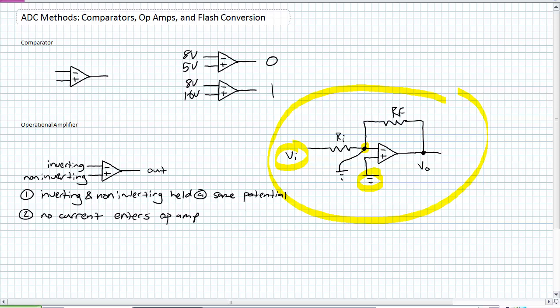If VI is higher than ground, conventional current will flow from positive to negative. Current is flowing through resistor RI. Now magical property number two comes into play. No current enters the opamp. If there is current coming into that node and none of it's going into the opamp, where is it going? According to Kirchhoff's current law, current is being forced through RF, the only other path there is.